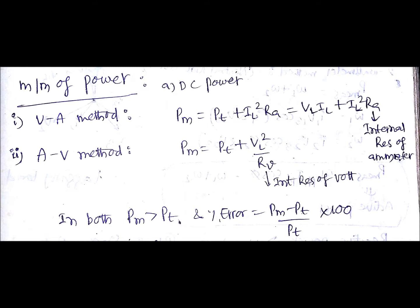In case of the ammeter-voltmeter method, that is the AV method, PM measured will be equal to PT, that is true power, plus VL square divided by RV, where RV is the internal resistance of voltmeter.